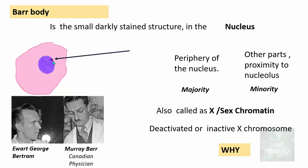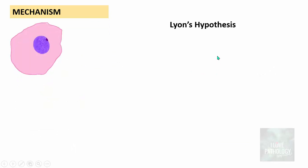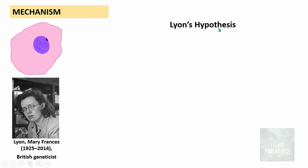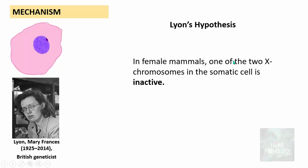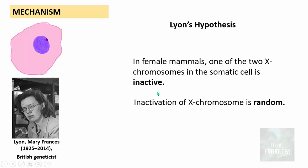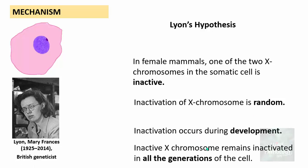Now we need to understand why there is inactivation of the X chromosome. To understand this, let us look at Lyon's Hypothesis, proposed by Dr. Lyon, a British geneticist. According to this hypothesis, in female mammals, one of the two X chromosomes in the somatic cell is inactive, and this inactivation of the X chromosome is random. Either of the X chromosomes can be inactivated, and the inactivation occurs during development. Importantly, this inactive X chromosome remains inactivated in all subsequent generations of that cell.